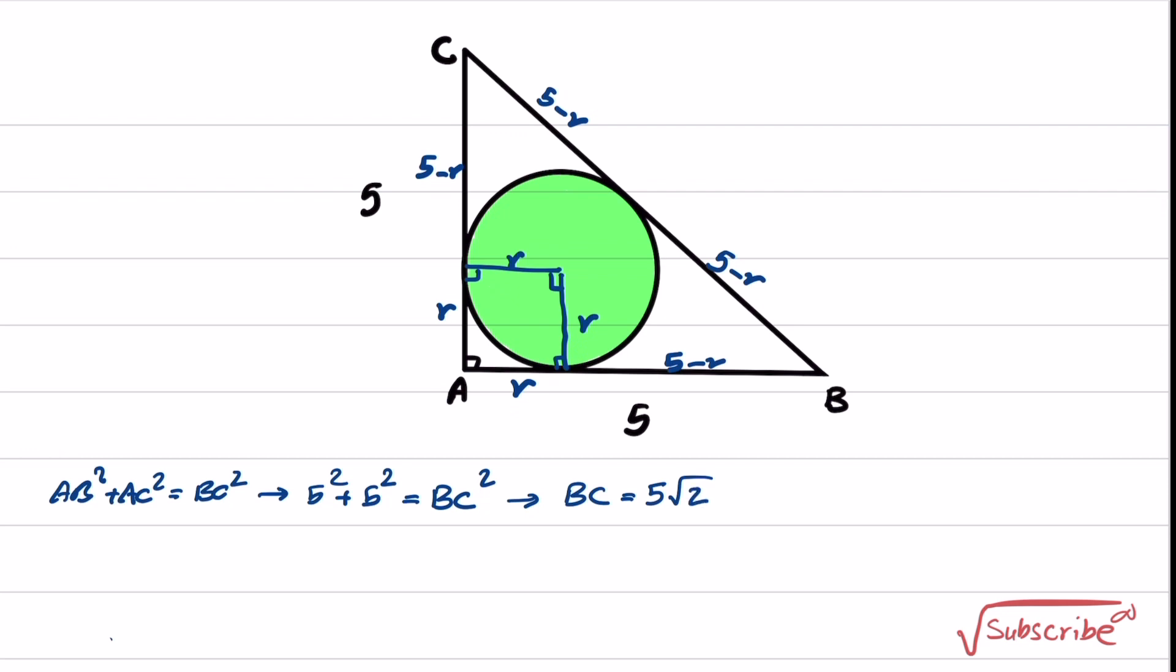At the same time, we know that BC is composed of two pieces, which is 5 minus r and 5 minus r. So we have another equation we can use. 2 times (5 minus r) equals to BC, which is equal to 5 times square root of 2.